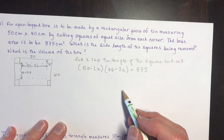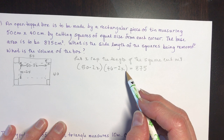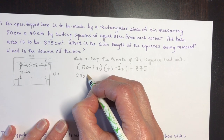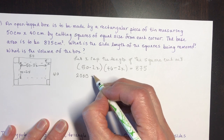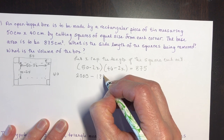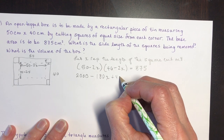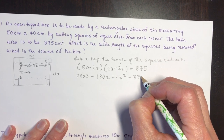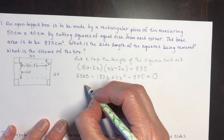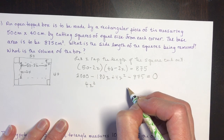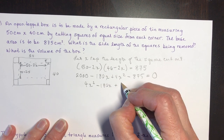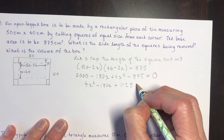Expanding: 50 times 40 is 2000, minus 100x minus 80x gives minus 180x, plus 4x squared. Subtracting 875 to set equal to zero, and writing in descending order: 4x squared minus 180x plus 1125 equals zero.